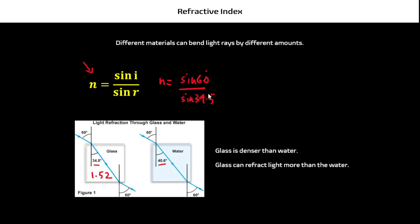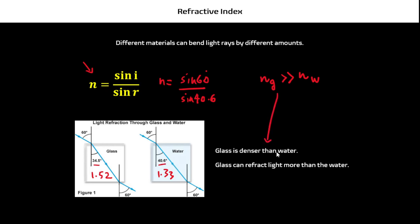For water, it would be sin 60 divided by sin 40.6, which gives approximately 1.33. So the refractive index for glass is higher than for water, meaning that glass is denser than water and glass can refract the light more than water. That is the measure of refractive index.